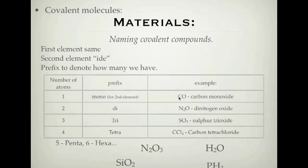If there's just one of the first element, we don't put mono. But if we have one of the second element, we put monoxide — remember, it should be monoxide. If we have two, it's di. If we have three, it's tri. If we have four, it's tetra.